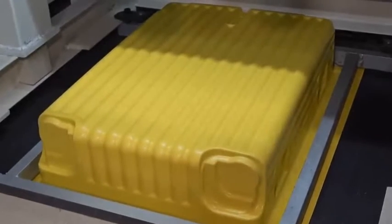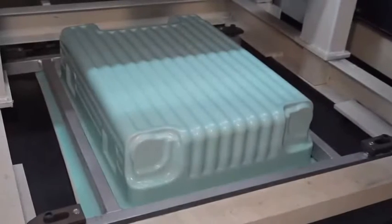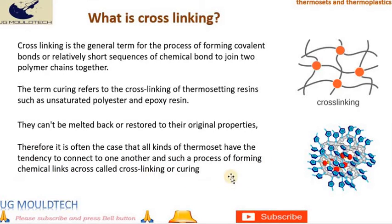What is crosslinking? Crosslinking is the general term for the process of forming covalent bonds or relatively short sequences of chemical bonds to join two polymer chains together. The term curing refers to the crosslinking of thermosetting resins such as unsaturated polyester and epoxy resin. Therefore, all kinds of thermosets have the tendency to connect to one another through a process of forming chemical links called crosslinking or curing.